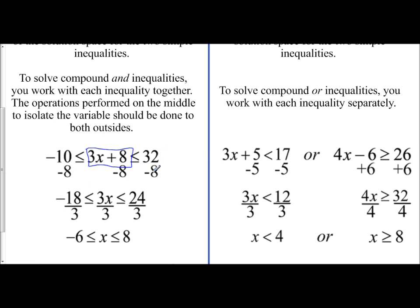32 minus 8 is 24. And so that allows me to get rid of this positive 8. And so now I'm just left with 3x in the middle. Well, how would I get rid of my coefficient of 3? I would divide by 3. And so if I do it to the middle, I have to do it to both outsides for it.